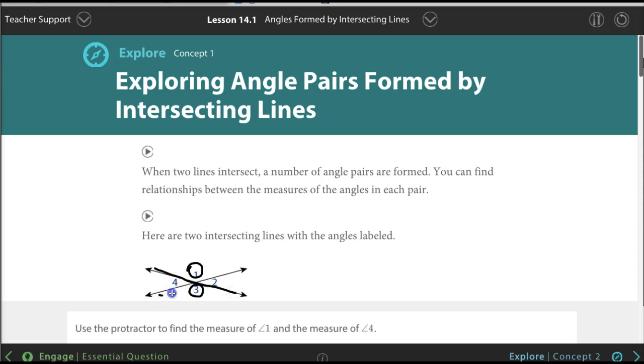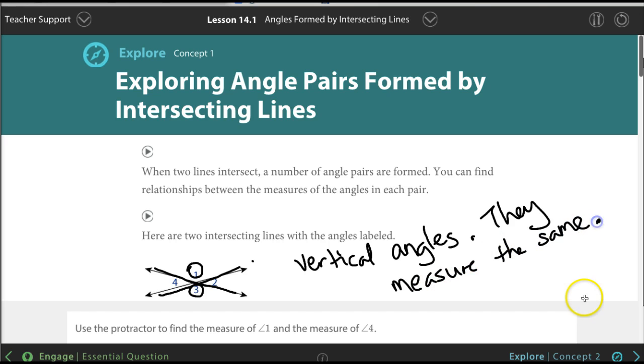What they're trying to teach you is that you see angle number one and three. They're opposite from each other and they measure the same, and they're called vertical angles. They measure the same.